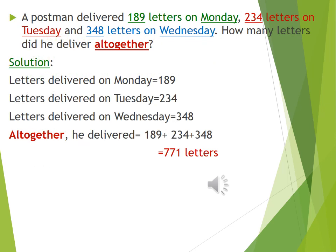A postman delivered 189 letters on Monday, 234 letters on Tuesday and 348 letters on Wednesday. How many letters did he deliver all together? Letters delivered on Monday is 189, on Tuesday is 234, on Wednesday is 348. So all together he delivered 189 plus 234 plus 348 equal to 771 letters.